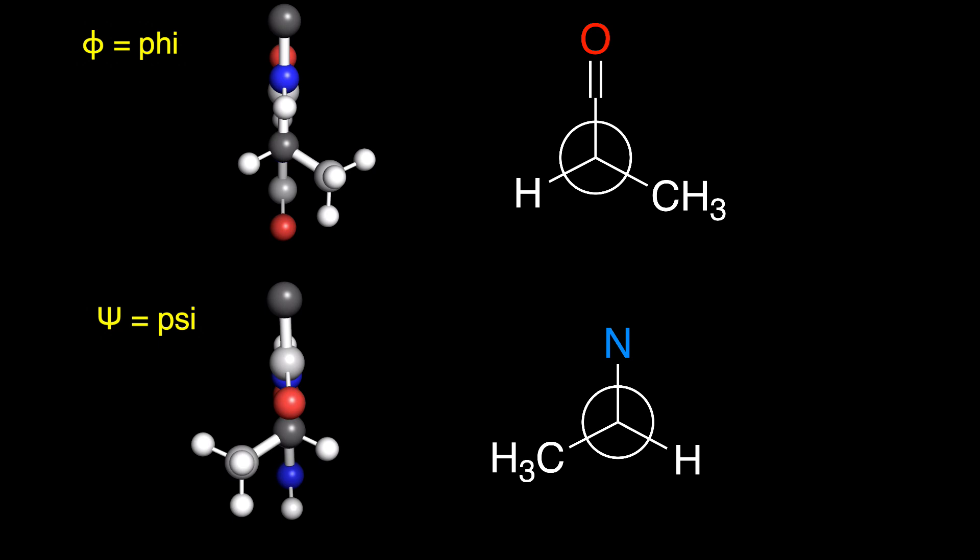For the Φ angle, our hydrogen points left, and our methyl points right. When we draw out the front carbon atom for ψ, we're looking at the alpha carbon from the opposite side. So, our hydrogen points right, and our methyl is on the left.